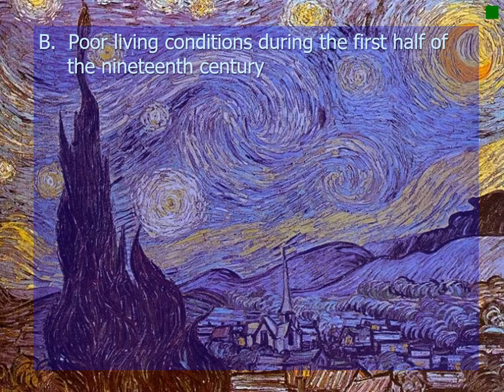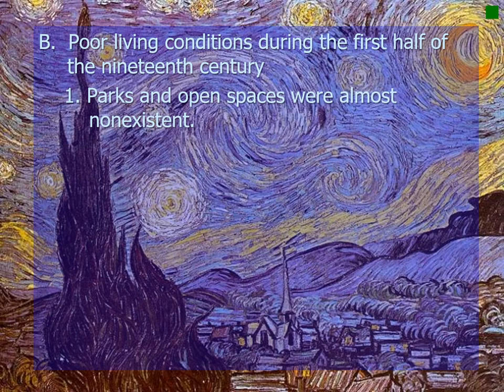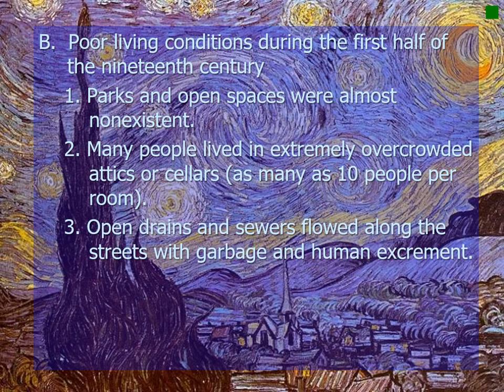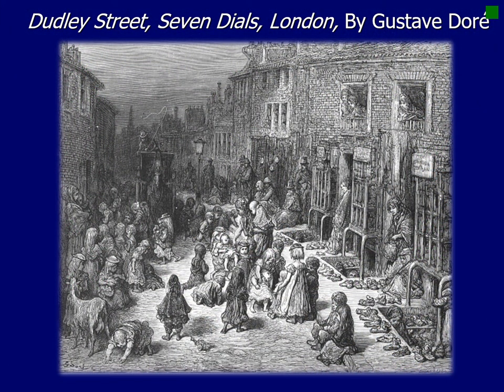Poor living conditions during the first half of the 19th century were severe. Parks and open spaces were almost nonexistent during the first Industrial Revolution. Many people lived in extremely overcrowded attics or cellars, with as many as 10 people per room. Open drains and sewers flowed along the streets with garbage and human excrement. No public transportation existed. An engraving of Dudley Street, Seven Dials, London by Gustave Doré illustrates these dirty, poor living conditions.